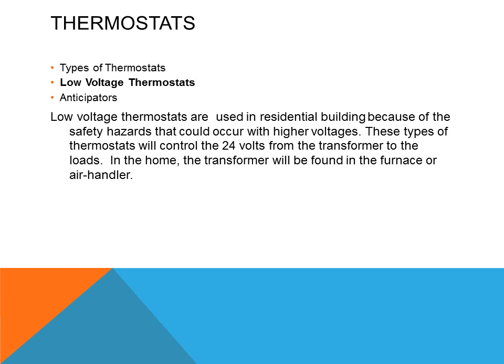Low voltage thermostats are used in residential and some commercial buildings because of the safety hazards associated with higher voltages. These thermostats operate at 24 volts from the transformer to the load, with the transformer typically found in the furnace or air handler. High voltage thermostats also exist, used for electric heaters and often found in commercial buildings.